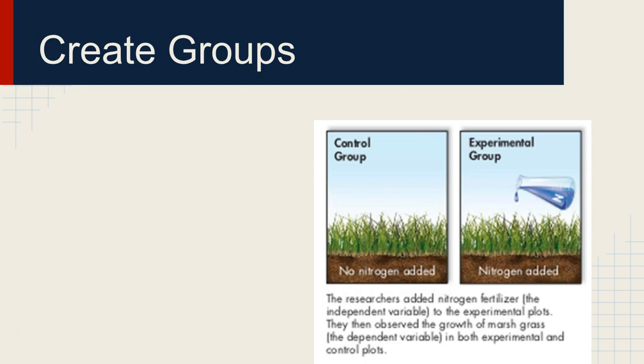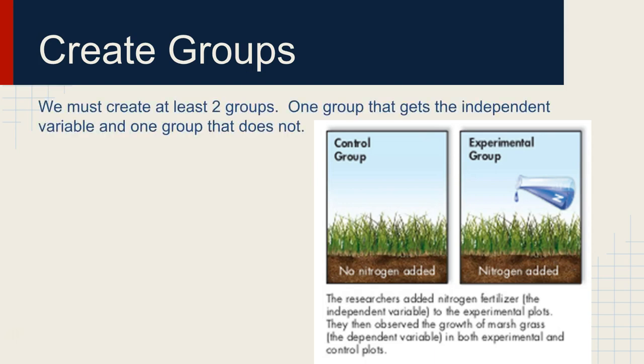Now, there's a couple different groups. There's an experimental group, and there's a control group. One of those groups gets the independent variable, and one does not. So this little beaker right here is nitrogen. That's fertilizer. So the experimental group is the group that gets the independent variable, which in this case is fertilizer, and the control group is the group that does not get it.